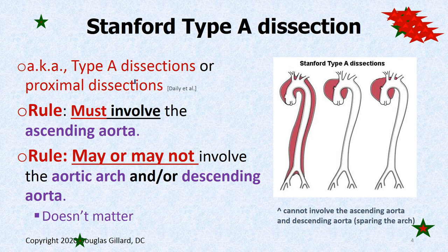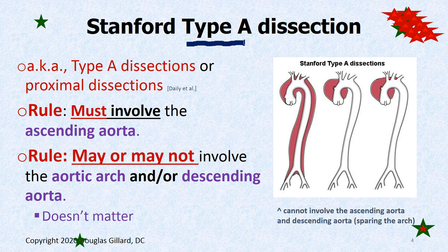Let's take a look at those. Stanford A — sometimes called type A dissections, Stanford A dissections, or proximal dissections. Look for type A or Stanford type A. For a Stanford type A dissection — because there's a type A and a type B — it has to involve the ascending aorta.